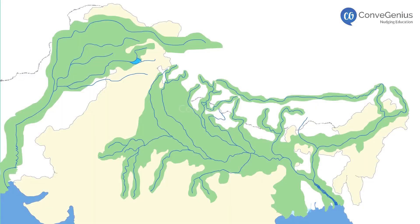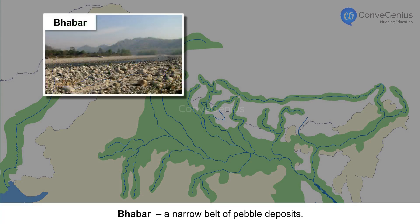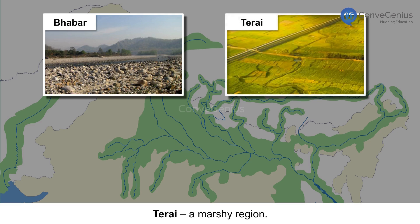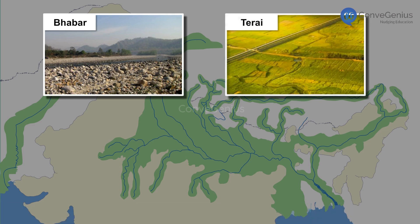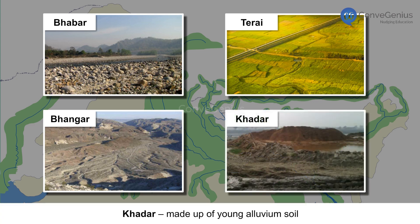Based on relief features, the plains are divided into four regions. Bhabar is a narrow belt of pebble deposits. Terai is a marshy region. Bhangar is made up of the oldest alluvium soil. Khadar, the most fertile region, is made up of young alluvium soil.